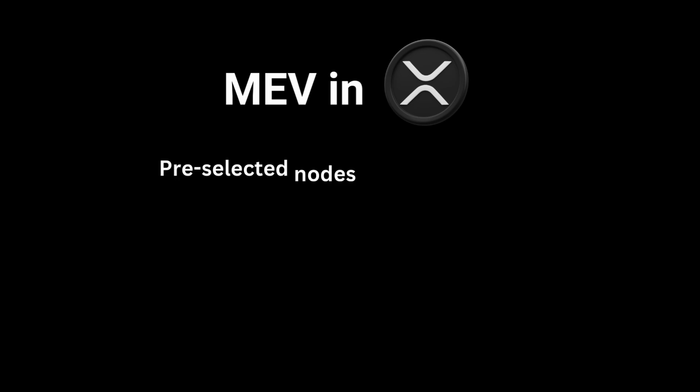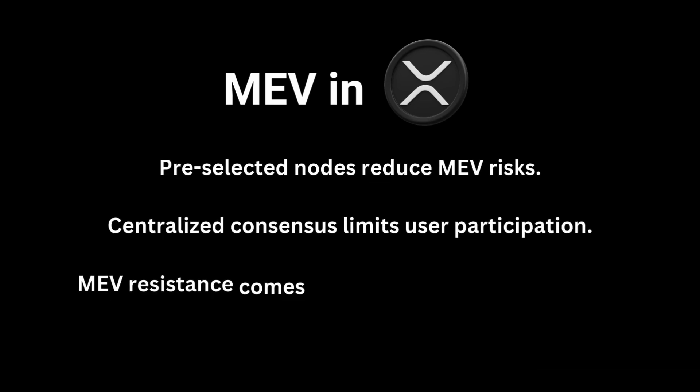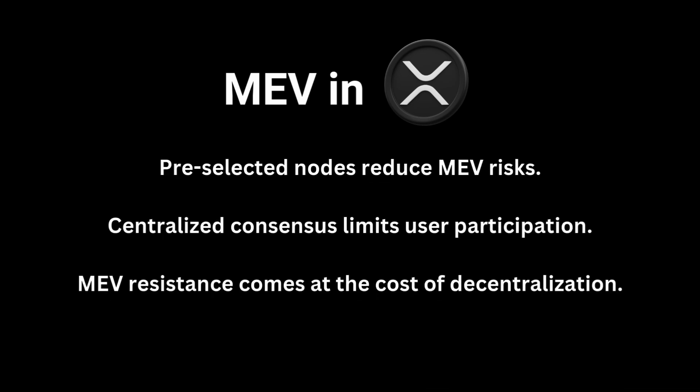XRP, using the Ripple Consensus Protocol, does not rely on miners or validators in the traditional sense. Instead, pre-selected nodes reach consensus, significantly reducing MEV opportunities. However, this centralized approach has trade-offs, as it limits decentralization and user participation in the validation process.